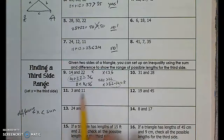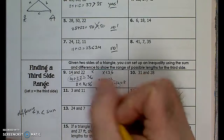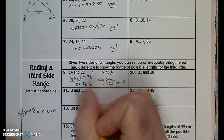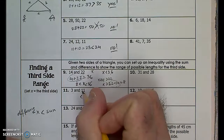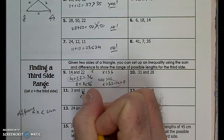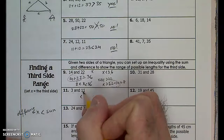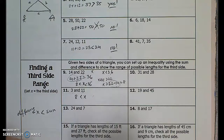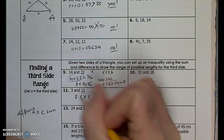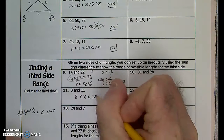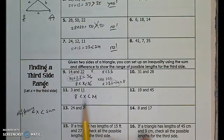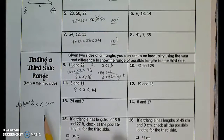Here we have two numbers, so I know that x is going to be greater than the difference. You take the positive difference — take the largest one first. 11 minus 3 gives me 8. And it's going to be less than the sum: 11 plus 3 is 14. Now that we know the rule, it becomes so easy.